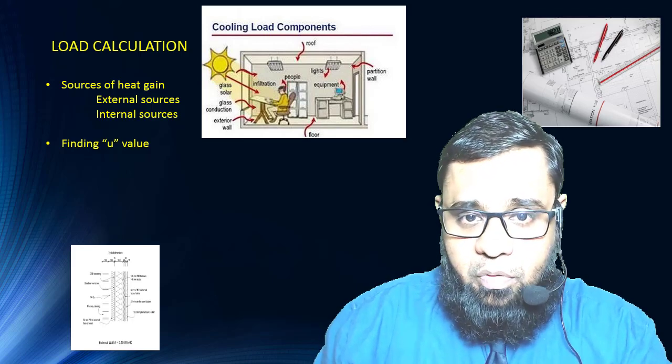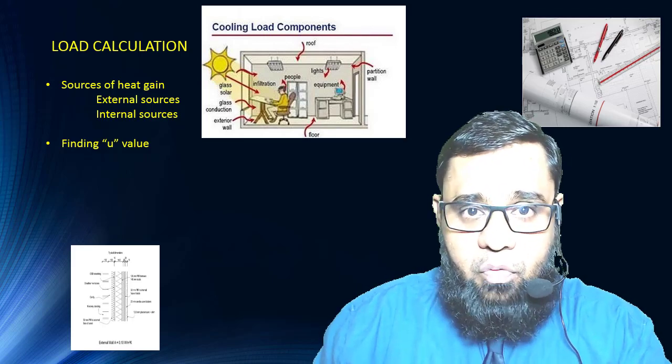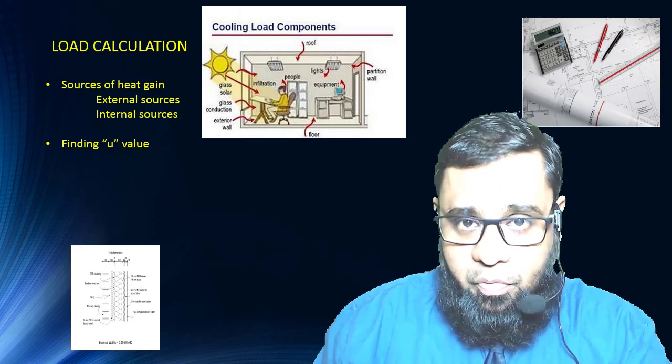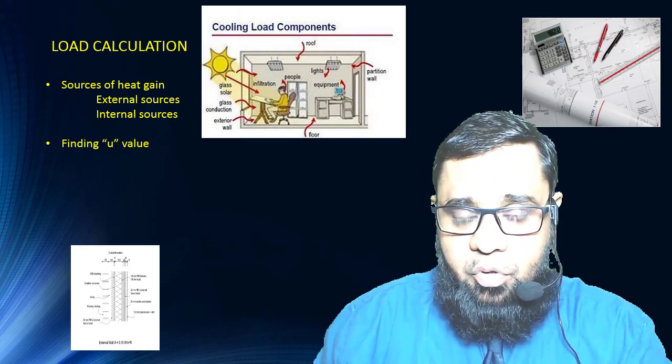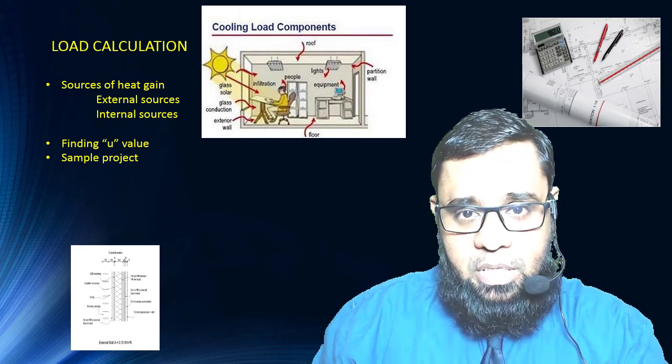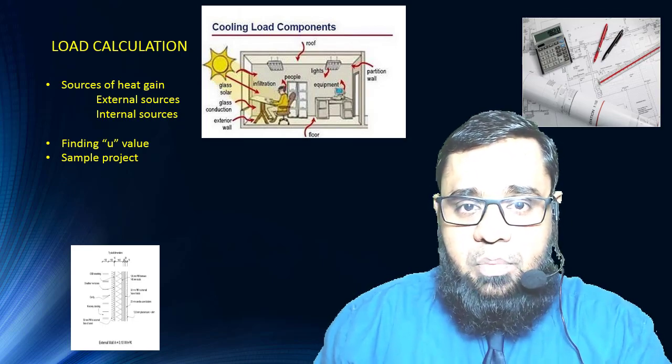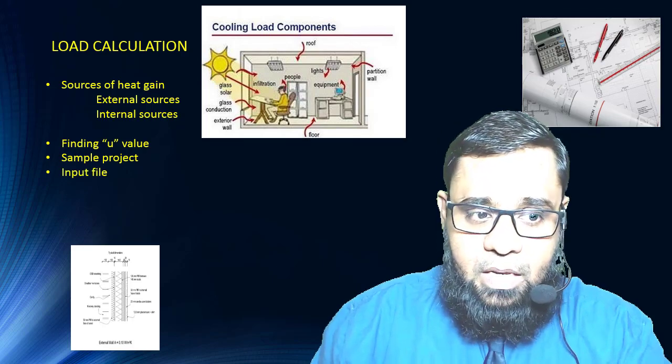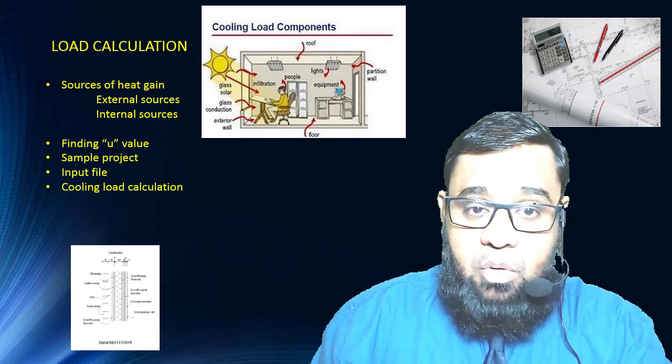Then we'll learn how to find out the U value for different construction materials, like U value for wall, U value for roof, U value for glass, that is overall coefficient of heat transfer. And with the help of U, we can find out the actual heat gain. Then the sample project—in the sample project, we'll learn all the possible sources of heat gain mathematically.